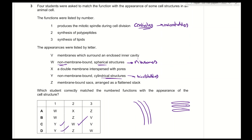Function 3 is synthesis of lipids, which is carried out by the smooth endoplasmic reticulum — it synthesizes lipids and steroids. The choice is between V (membranes surrounding an enclosed inner cavity, i.e., a tubular structure = smooth ER) and W (non-membrane-bound spherical structures = ribosomes). V is correct. The correct answer is C.